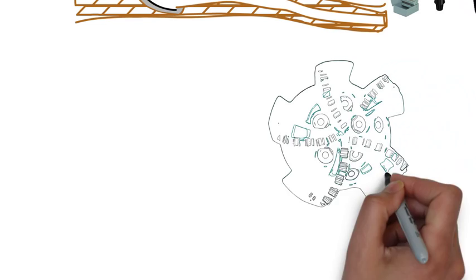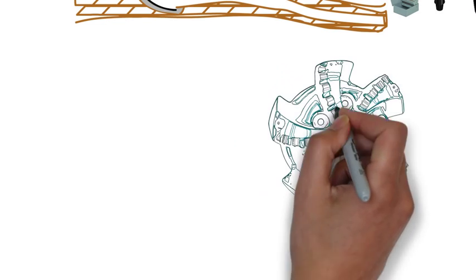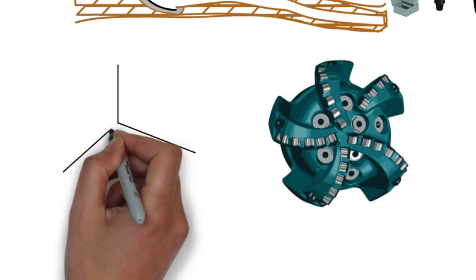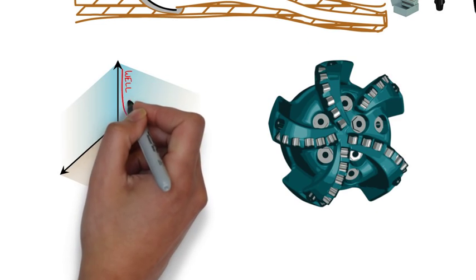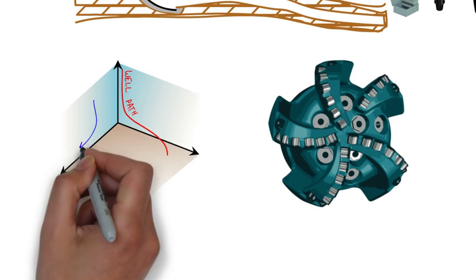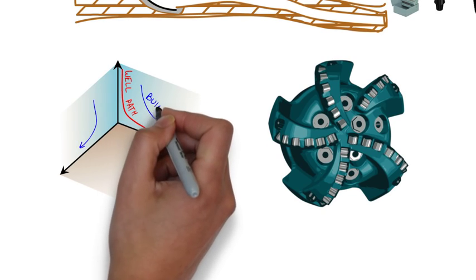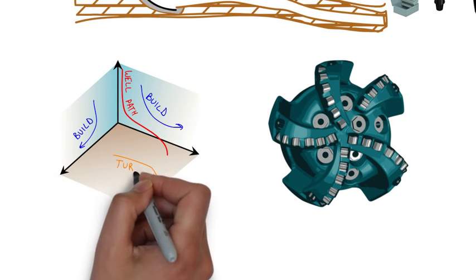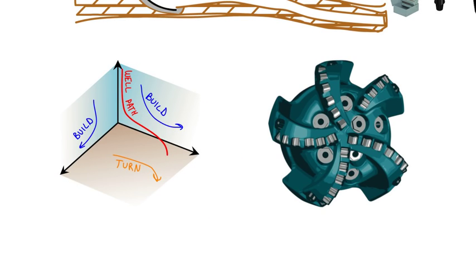The goal of the drill bit is to fail the formation in front of it, following a pre-planned path. Obviously, we want the bit optimized to do this in the most safe, efficient, and cost-effective way possible.